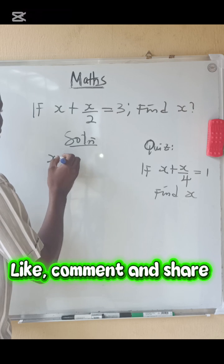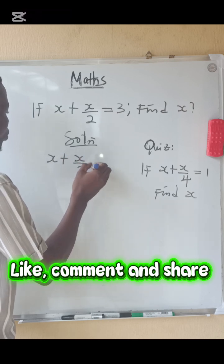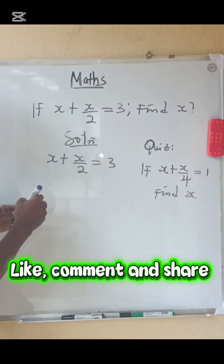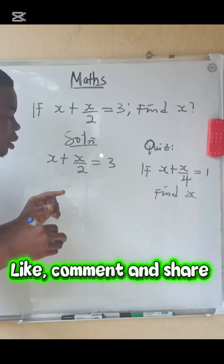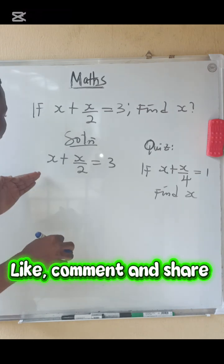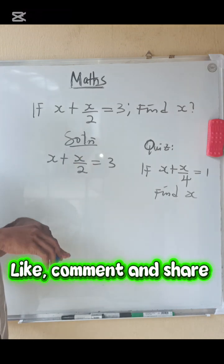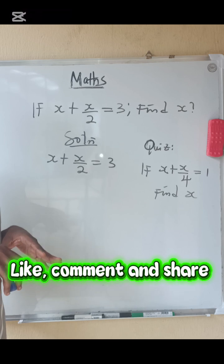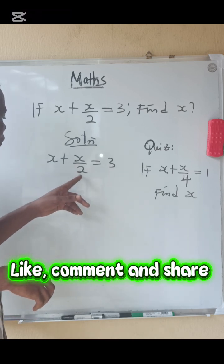So x plus x over 2 equals 3. The first thing you have to do here is make sure that this equation is in linear form, because if you look here, we have a fraction, right?